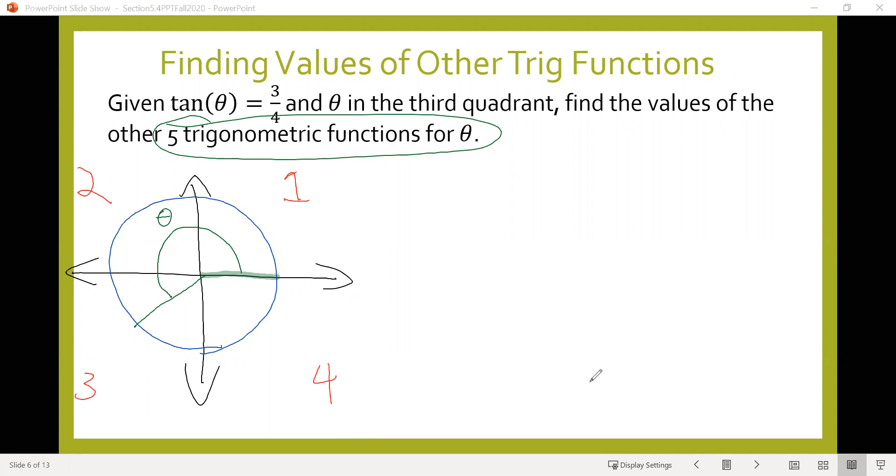We are told that the tangent of that angle is three over four. Recall that tangent of an angle equals the ratio y over x, which leads us to believe that this point where the terminal side intersects the circle should be the point (3, 4).